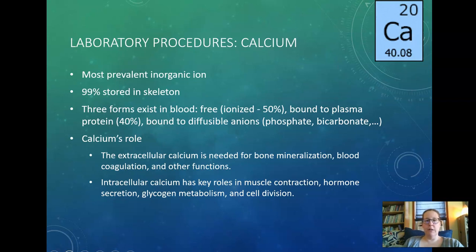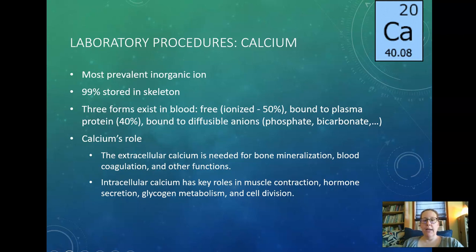Let's talk about lab procedures associated with bones — calcium, phosphorus, and magnesium. Calcium is the most prevalent inorganic ion. 99% of calcium in your body is stored in your skeleton, making your bones strong. Three forms exist in the blood: free or ionized calcium, that's about half; calcium bound to plasma proteins like albumin, about 40%; and about 10% bound to diffusible ions like phosphate or bicarb. Extracellular calcium is needed for bone mineralization, blood coagulation, and other functions.